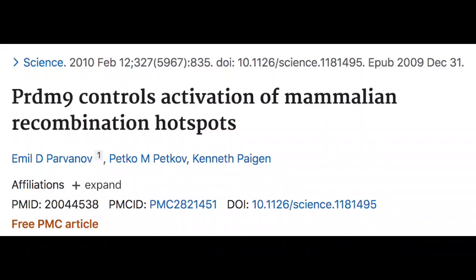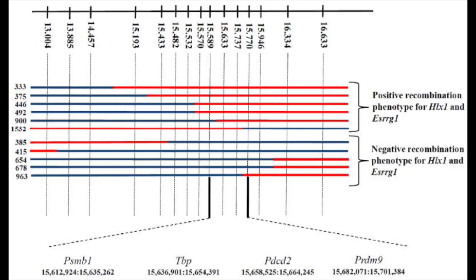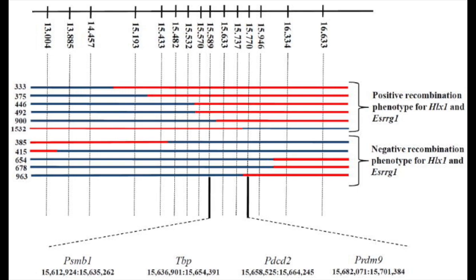The evidence suggests - I'm pulling up the paper here. Here it is: PRDM9 controls activation of mammalian recombination hotspots. There's more hotspots in African people groups. That's why they have more genetic diversity. Now, here's the thing.